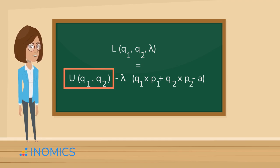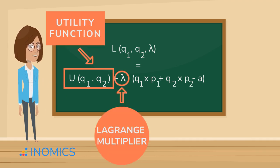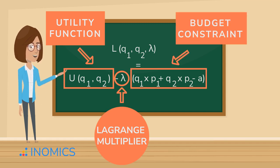Here, U(Q1, Q2) is the utility function. Lambda is the Lagrange multiplier. Lambda is being multiplied with the same exact budget constraint we had before, rearranged. The idea is to find the values of Q1 and Q2 that maximize utility while respecting the budget.